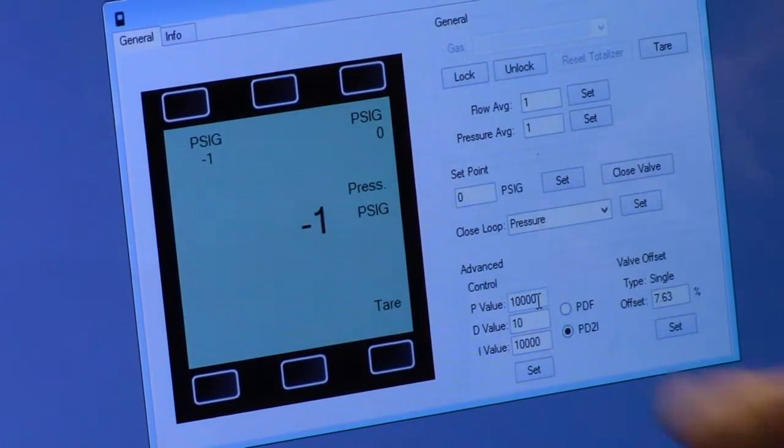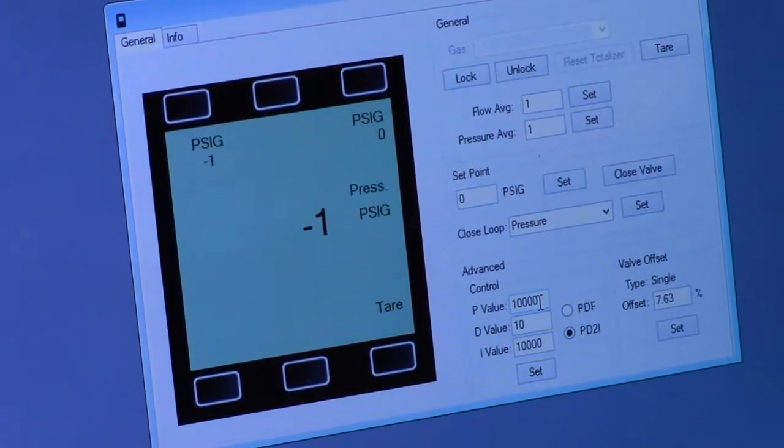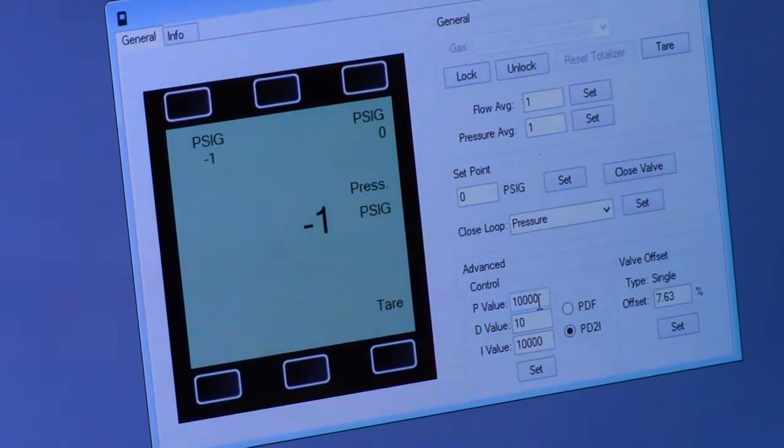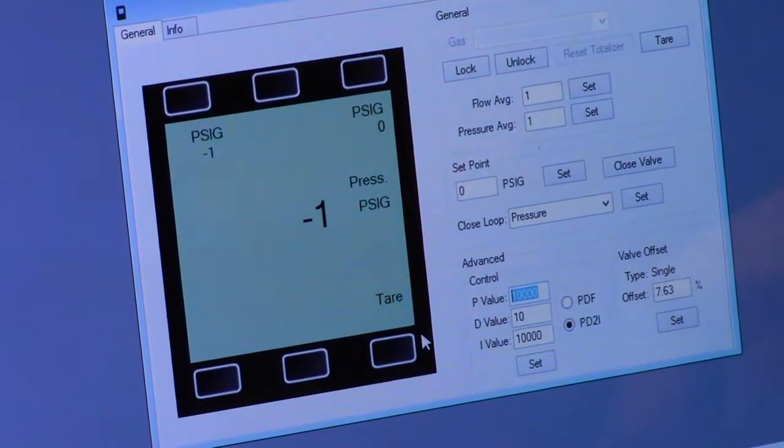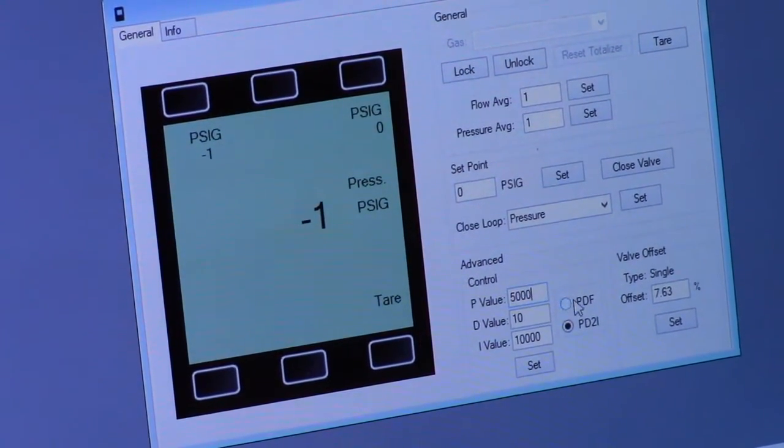They're currently set at the factory default, but they will remain wherever you have set them, whether you turn the power on or off. In this case, if I wanted to change the P value to 5000, I would go to 500 in the P field.